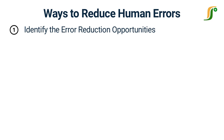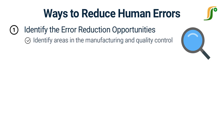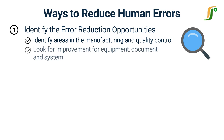Identify the error reduction opportunities. The space where a human error can occur must be identified in manufacturing and quality control. It should be identified separately for the equipment, documentation, and systems, where improvement can be done.